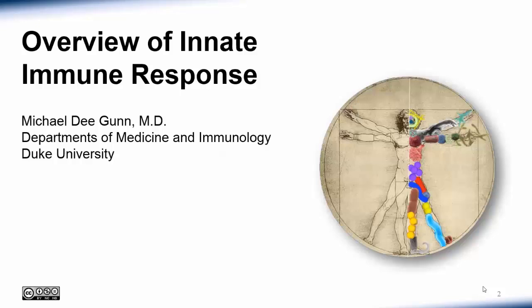Hello, I'm Dr. Michael Gunn from Duke University. In the next two lectures, I will give you a broad overview of innate and adaptive immune responses while highlighting some of the key points about how the immune system works. By the end of these lectures, we will have constructed a map of the immune system that will serve to orient you through the rest of the course.